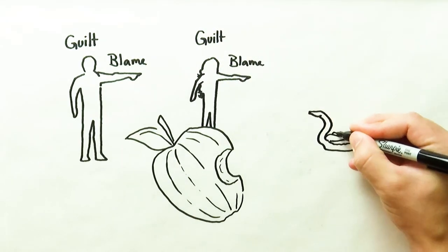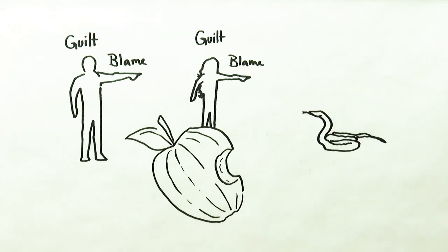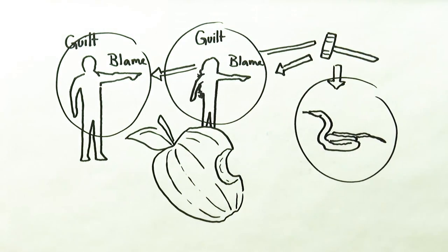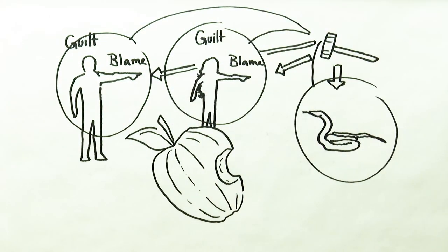God then pronounces a judgment on the serpent for inspiring these acts of sin. But the judgment didn't stop with the one who started it. Every participant in that sinful situation received a consequence for their part in it. This is how God deals with acts of wrong. And when we reach the end of our life, God will deal with us in the same way if our wrongs were never amended.